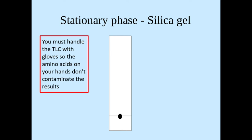We must draw the line with a pencil so that the line doesn't get dissolved within the solvent which is what is added next. We must handle this thin layer chromatography made with silica gel with care because amino acids on our hands might contaminate it and we don't want that to happen.